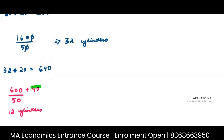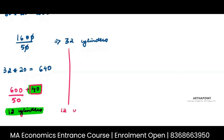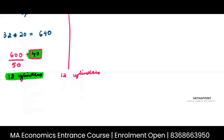But I'm left with 40 rupees from which I cannot buy a cylinder because the cylinder costs 50. So the maximum I can do is buy 12 cylinders and save the 40 rupees. I buy 12 cylinders and save 40. On those 12 cylinders I get a refund of 240 rupees. Adding the saved 40, I now have 280 rupees.